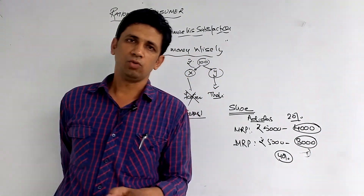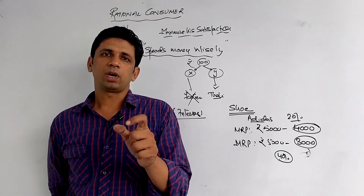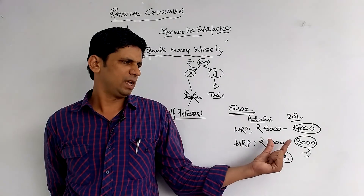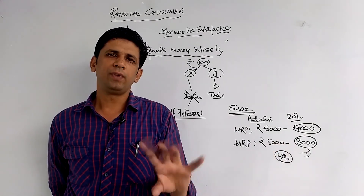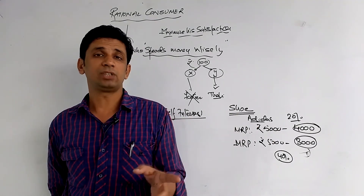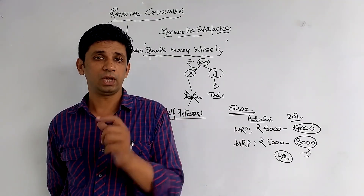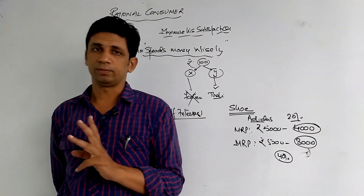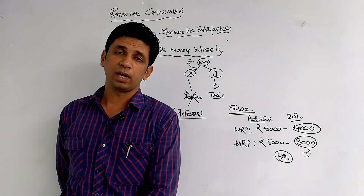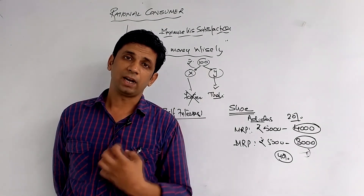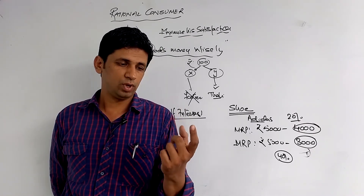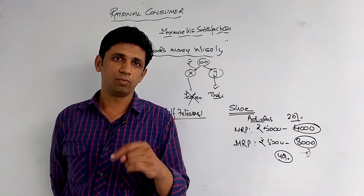So being a rational consumer, for the same product, instead of paying Rs. 4000 at the outlet, you save Rs. 1000 by purchasing online at Rs. 3000. That is why discount offers in the market attract us — because we are rational consumers. If a commodity is available at MRP and also at a discount, you will naturally opt for the discounted price.